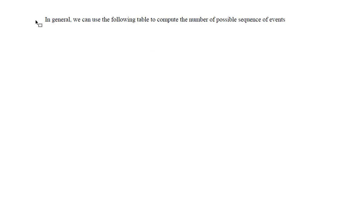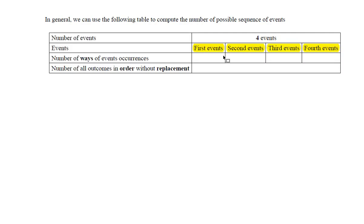In general, we can use the following table to compute the number of possible sequences of events. This table contains all the events written in order from the first to the fourth. The first event may happen in four ways, the second in three ways, the third in two ways, and the fourth in one way. We multiply them together and we get the number of all possible sequences or all possible outcomes. Thank you very much for listening and have a good day.